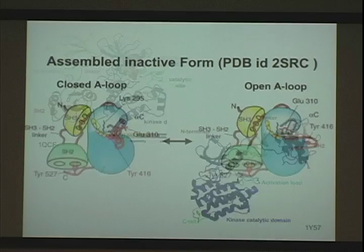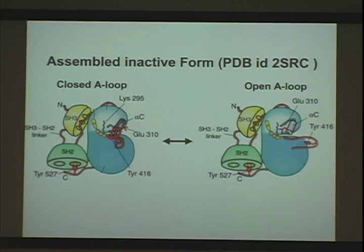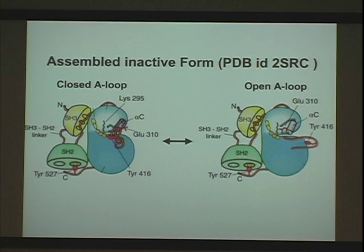Now you ask yourself: presumably the regulatory machinery — SH2, SH3 — is there to prevent activation. One way to ask that question would be to say, if I could at the molecular level really guarantee that these interactions always engage, how hard is it to actually activate the activation loop? And presumably this regulatory machinery is making it harder to go to the active state. This is a hypothetical state — nobody has ever seen this — but hypothetically, if these interactions are still there, this transition should be hard.